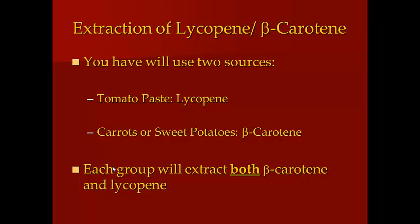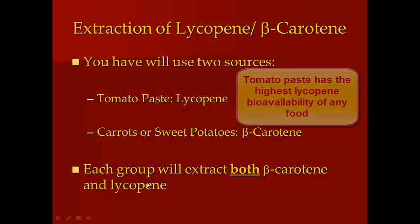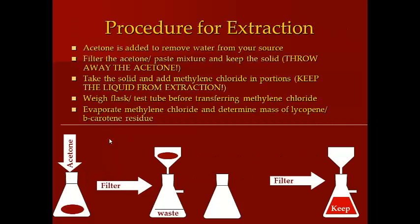Today for lab, we're going to extract lycopene and beta-carotene. We'll extract lycopene from tomato paste, and beta-carotene from either carrots or sweet potatoes — you'll have an option to pick. Each lab group will extract both. You're going to put your sample in an Erlenmeyer flask, add acetone, and swirl for about 15 to 20 minutes. The purpose of this step is to remove water from the sample. After this, you'll do a vacuum filtration to collect the solid. The acetone collected is waste.